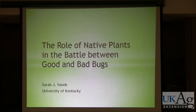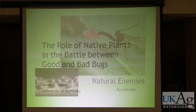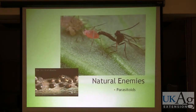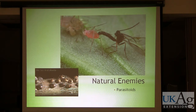Beneficial insects are of course in the broader category of natural enemies. There are basically three categories of natural enemies of insect pests. The first that I'll mention here are parasitoids. Parasitoids are organisms that spend a portion of their life cycle within their host, and as a result they end up killing the host.